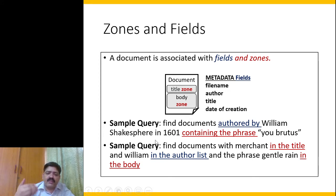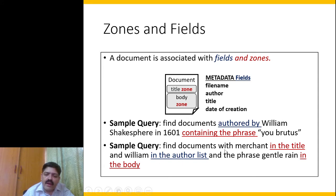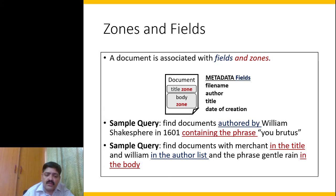If fields are available at the time of matching, we can improve precision for these kinds of queries. Here is another query: find documents with 'the merchant' in the title, 'William' in the author list, and the phrase 'gentle rain' in the body. This query talks about multiple zones and multiple fields.